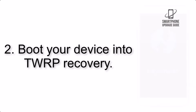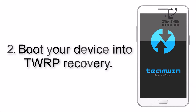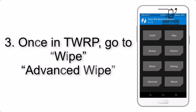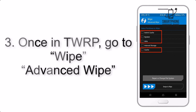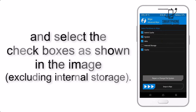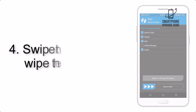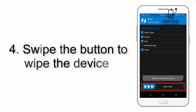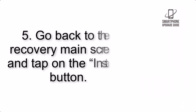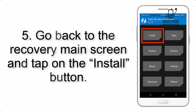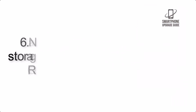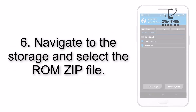Step 2: Boot your device into TWRP recovery. Once in TWRP, click on Wipe, then Advanced Wipe, and select the checkboxes as shown in the image, excluding internal storage. Step 4: Swipe the button to wipe the device.